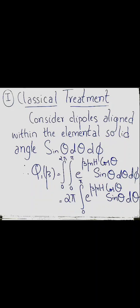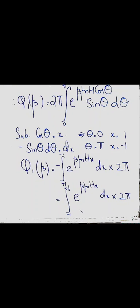We substitute cos(theta) = x, so dx = -sin(theta) d(theta). Changing limits: when theta = 0, x = 1; when theta = pi, x = -1. So Q_1(beta) = integral from +1 to -1 of e^(beta*mu*H*x) dx times 2pi. Interchanging the limits introduces a factor of -1, making the entire partition function a positive value: 2pi * integral from -1 to +1 of e^(beta*mu*H*x) dx.